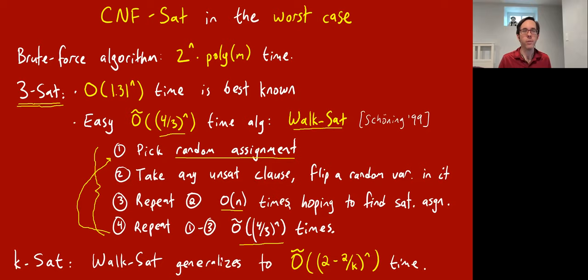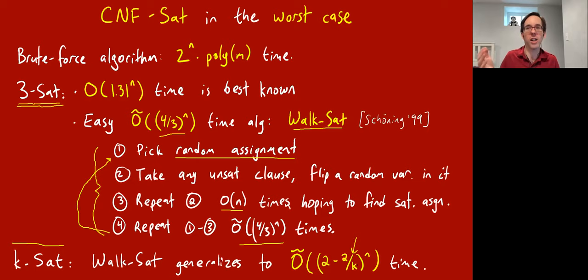There's a nice generalization of this algorithm to the case of k-SAT, where the running time becomes like (2 − 2/k)^n. So it's 1.5^n for 4-SAT, and 1.6^n for 5-SAT, and so forth. As k gets large it gets close to 2^n time, which is trivial. But for every fixed k, it's better than 2^n time.